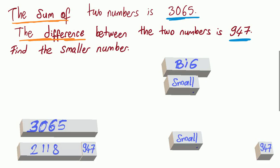Welcome, Primary 4 students. I'm going to solve a word problem for you. Let's start. The sum of two numbers is 3065. The difference between the two numbers is 947. Find the smaller number.